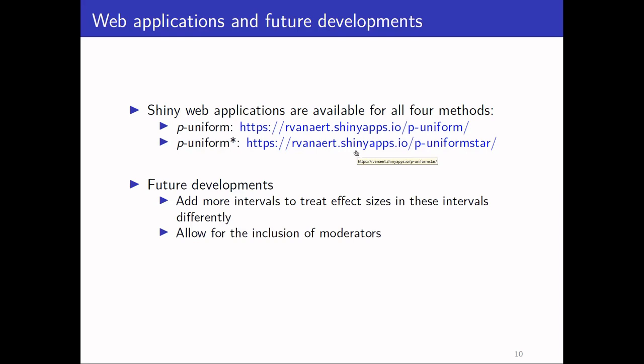For future developments, we plan to extend the PUNIFORM star method so that it does not only draw a binary distinction between significant and non-significant studies, but extends this to more intervals. For example, the probability of publishing a study could differ for positive versus negative studies. We are also already working on the inclusion of moderators in the model, to correct for publication bias when you are interested in the effects of moderators in a meta-analysis.